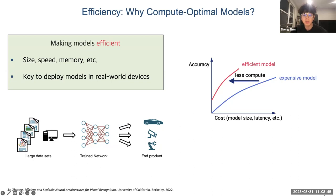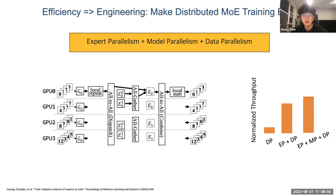In the spectrum of making Mixture of Experts models more efficient, it means combining different parallel strategies like expert parallelism, model parallelism, and data parallelism. Using just data parallelism means you distribute all experts onto one device, which will result in very large memory consumption.